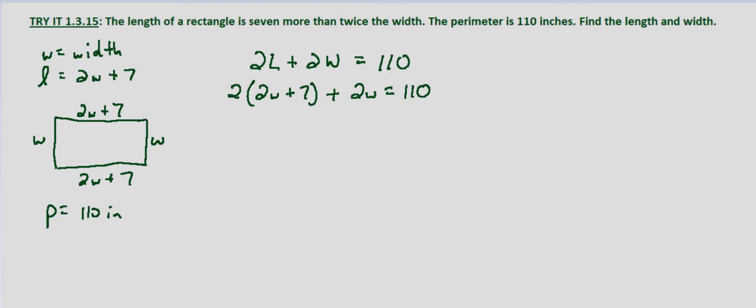But instead we're just going to work through how we normally would by distributing first. So 2 times 2W is 4W plus 2 times 7 is 14, plus 2W equals 110.